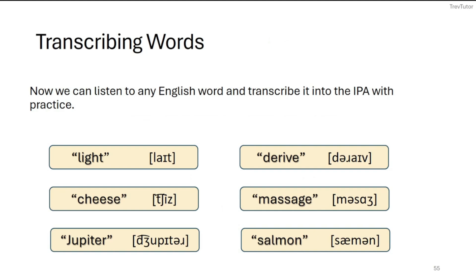Now that we understand place, manner, and voicing for consonants as well as vowel descriptions, we can transcribe entire words into the IPA. 'Light' has three sounds: /l/, /aɪ/, /t/. 'Cheese' also has three sounds: the affricate /tʃ/, vowel /iː/, and final consonant. 'Jupiter' has more: /dʒ/, /uː/, /p/, /ɪ/, /t/, and because '-er' is unstressed, we write a schwa plus /r/. Some textbooks write a syllabic /r/ with a line underneath instead.